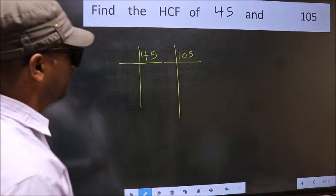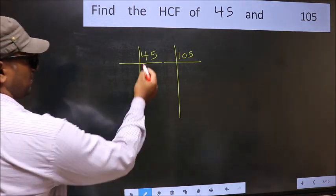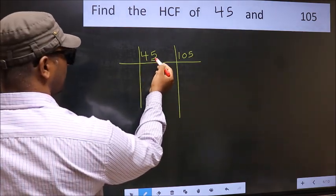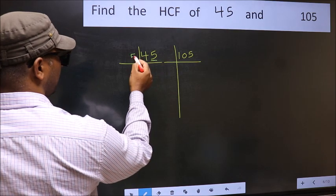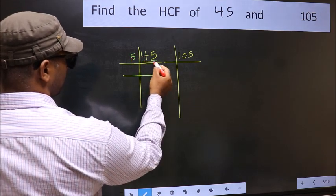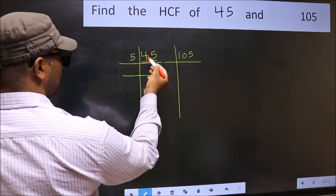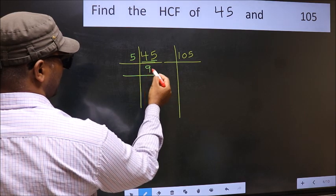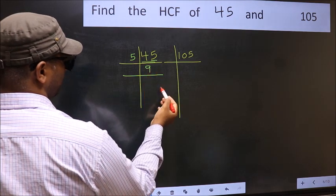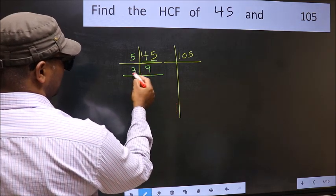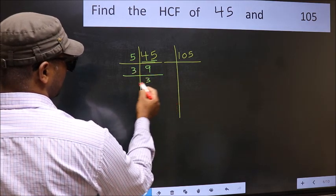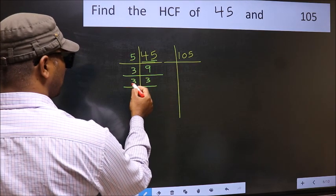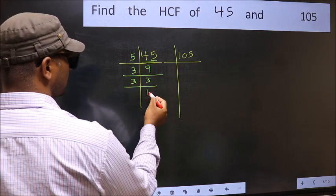For 45, the last digit is 5, so we take 5. When do we get 45 in the 5 table? 5 times 9 is 45. Now 9 is 3 times 3. Since 3 is a prime number, 3 times 1 is 3. So 45 = 5 × 3 × 3.